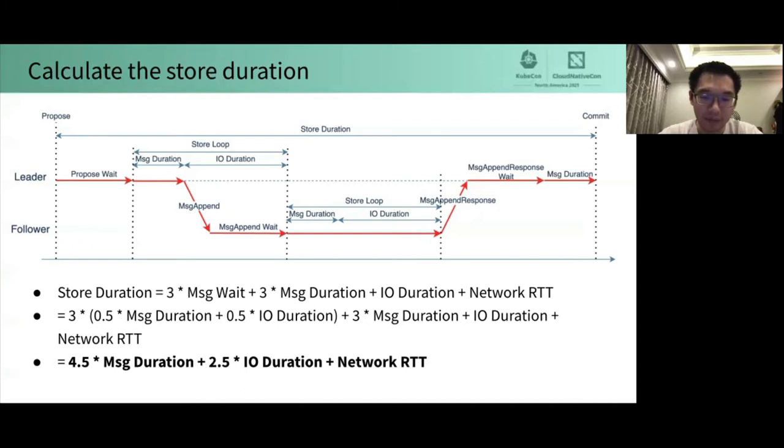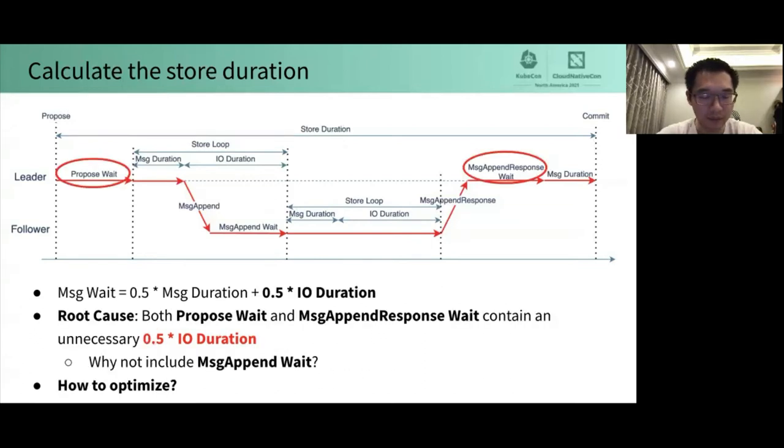Since the IO requests of a leader and a follower are parallel, the 2.5 IO duration is unexpected. Where does the extra time come from? As mentioned before, message wait is equal to the sum of 0.5 message duration and 0.5 IO duration. When a proposal is proposed, message append has to wait for 0.5 IO duration more before sending to followers. Similarly, when a message append response is received, the proposal has to wait for 0.5 IO duration more before being committed.